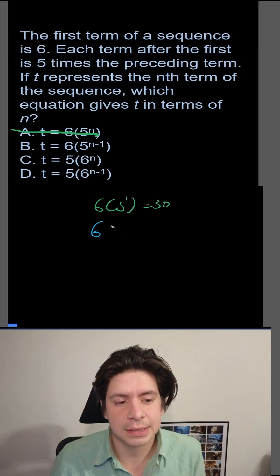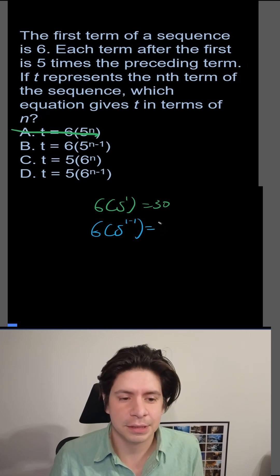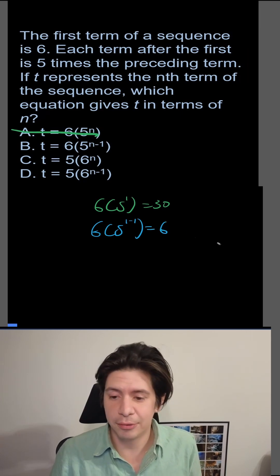In B, we get 6 times 5 to the 1 minus 1. That equals 5 to the 0, which is 1. 6 times 1 is 6. So that one works.